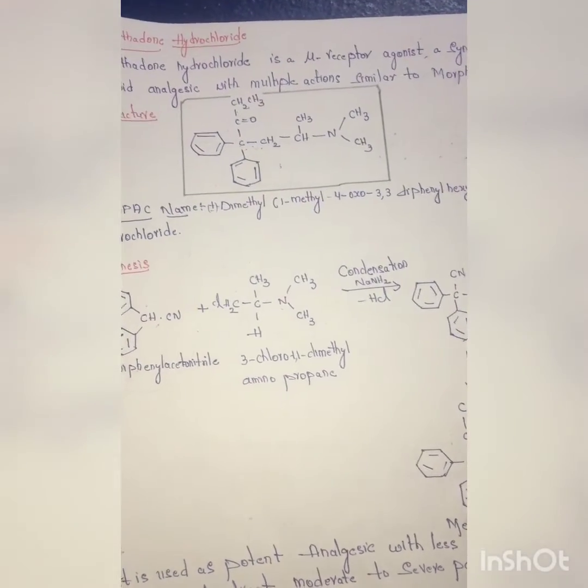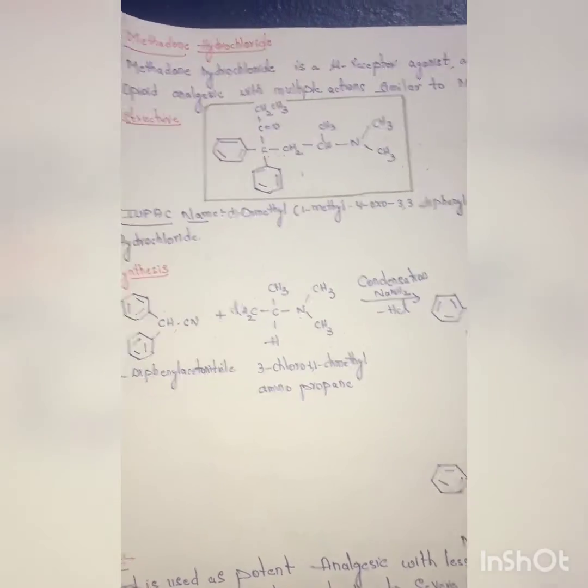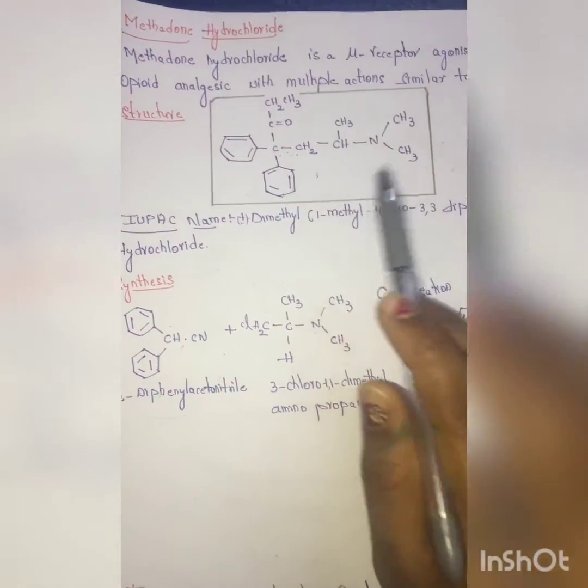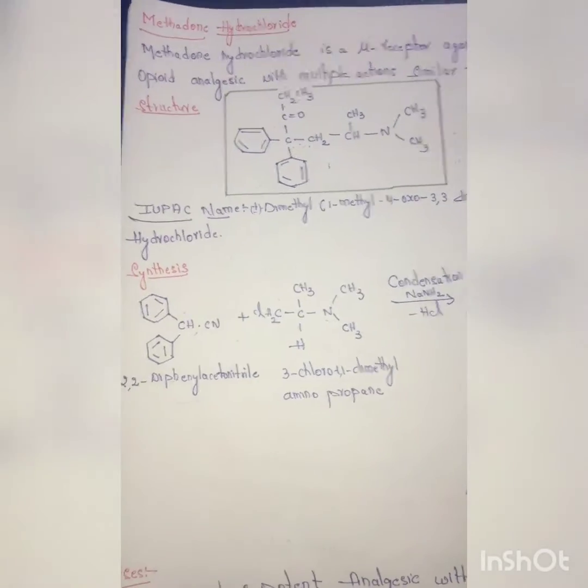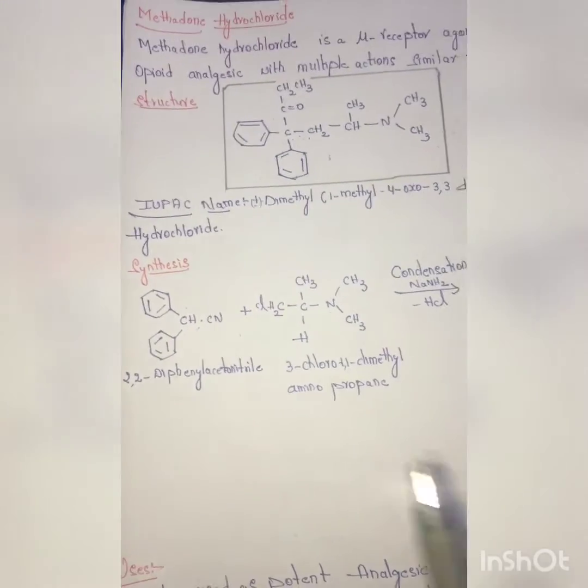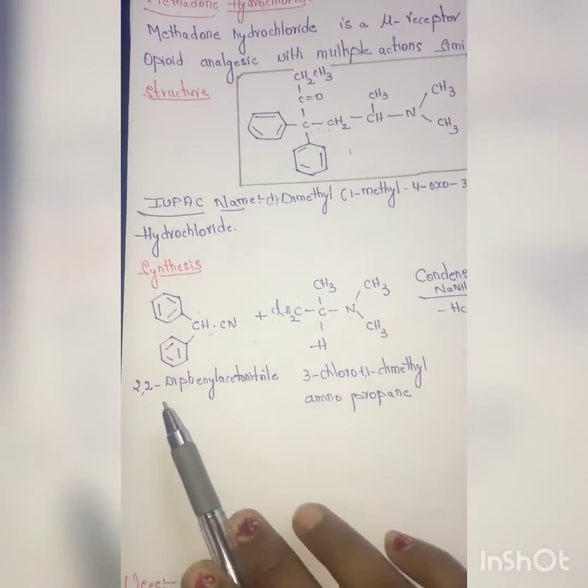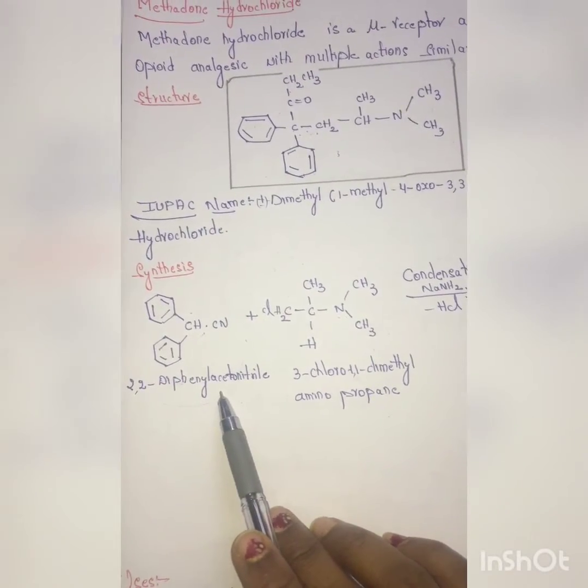Methadone is a mu-receptor agonist. Coming to the synthesis, it involves the reaction between 2,2-diphenyl acetonitrile and 3-chloro-1,1-dimethylaminopropane.